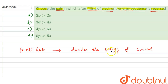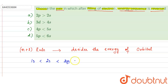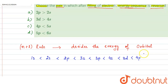According to the Aufbau principle, electrons are first filled in lower energy orbitals, then in increasing order of energy. According to the N plus L rule, the energy order is: 1S is least, then 2S, then 2P, then 3S, then 3P, then 4S, then 3D, then 4P, then 5S.